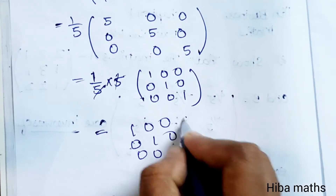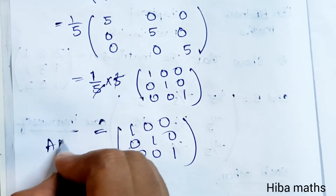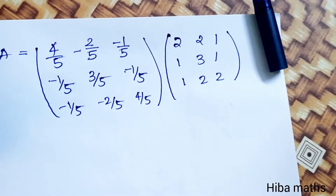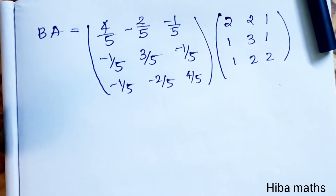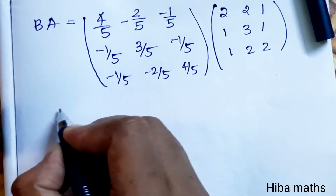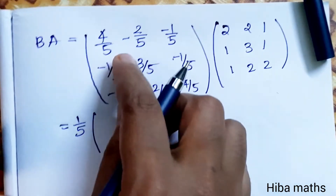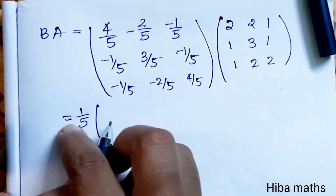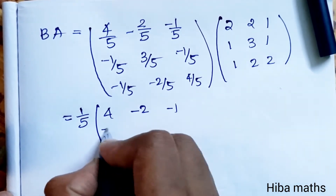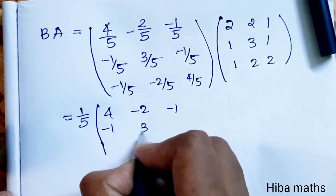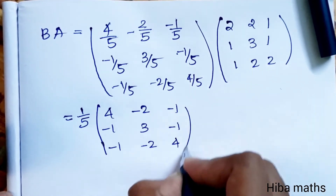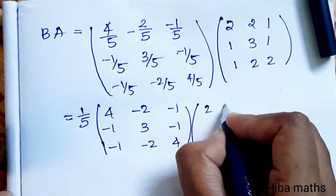We have one proof that A×B equals I. Now we compute B×A. We set up [4, -2, -1; -1, 3, -1; -1, -2, 4] multiplied into [2 2 1; 1 3 1; 1 2 2].